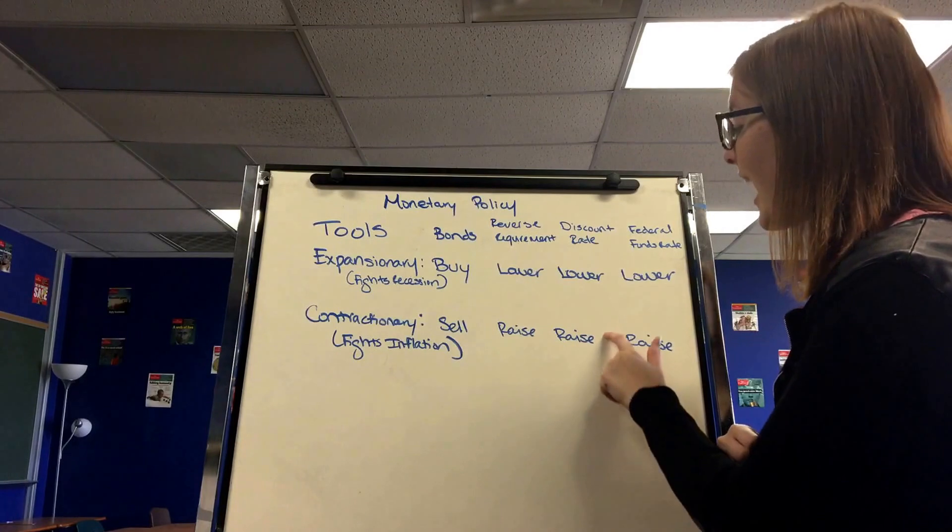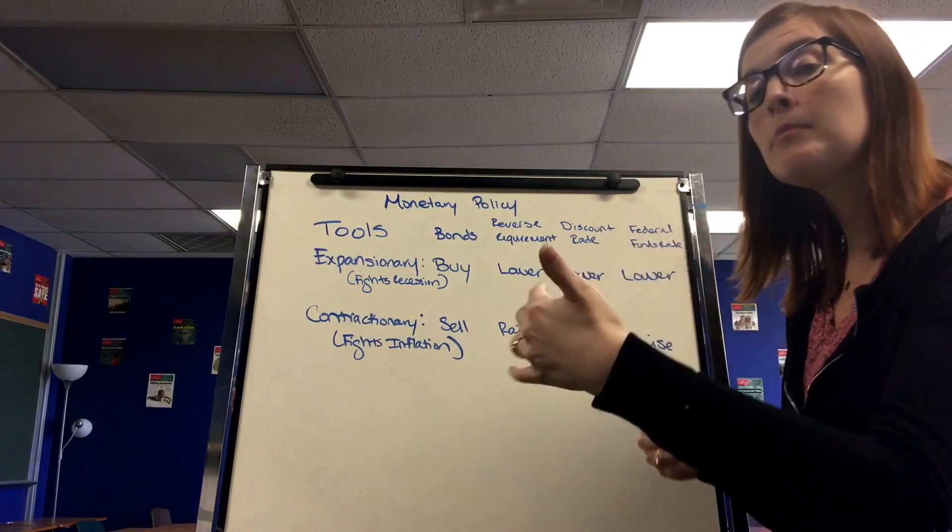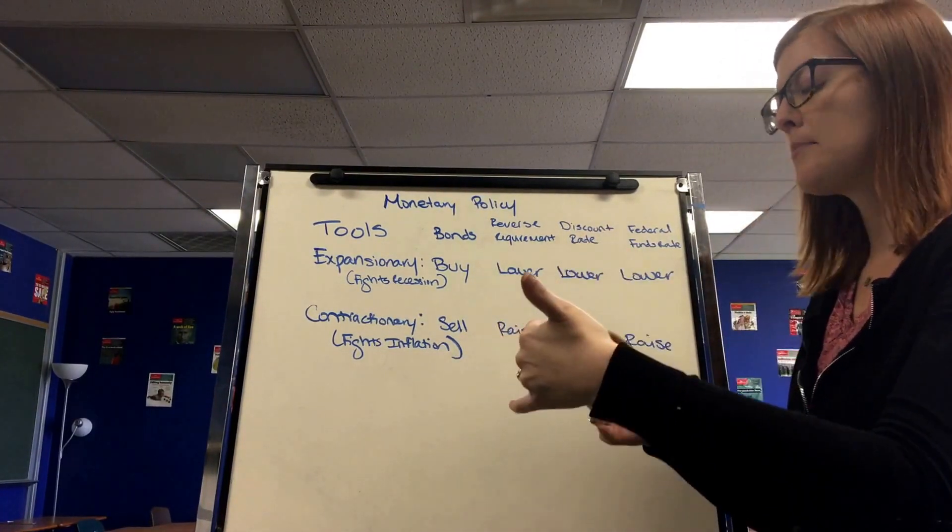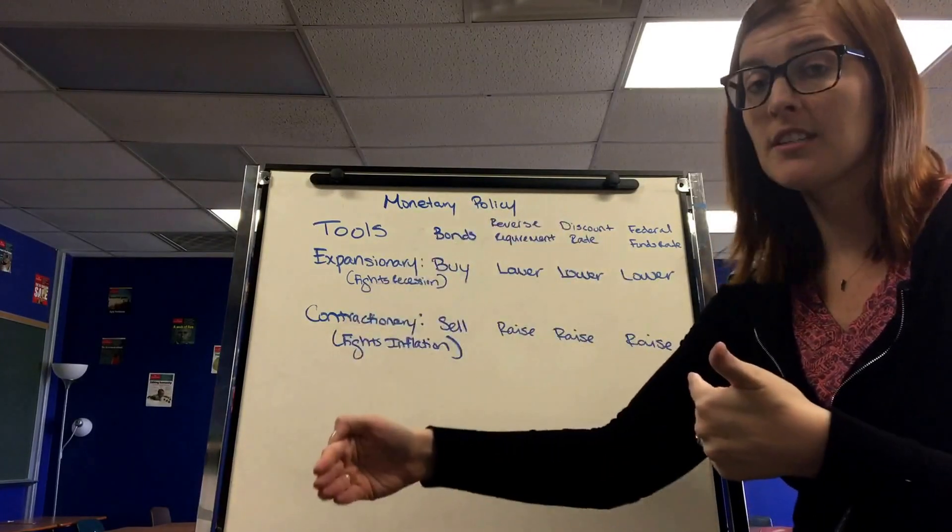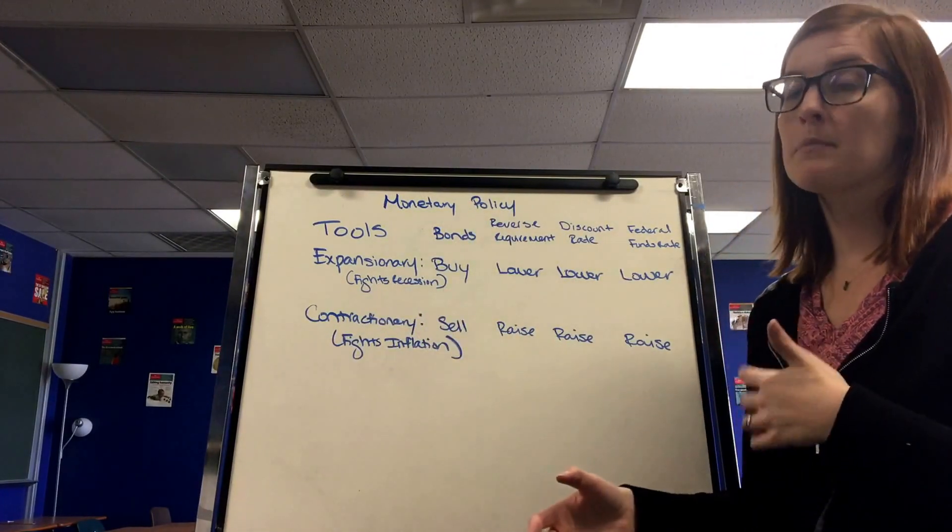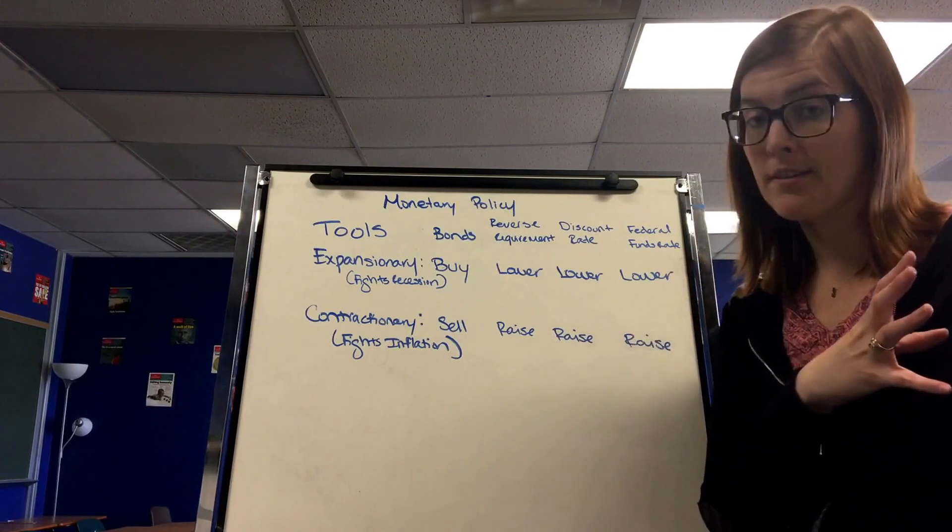If they have a high discount rate, this means the Federal Reserve will still bail out those banks, but those banks have to pay them back with a ton of interest so it ends up decreasing the money supply because they're using that money to pay back their interest.